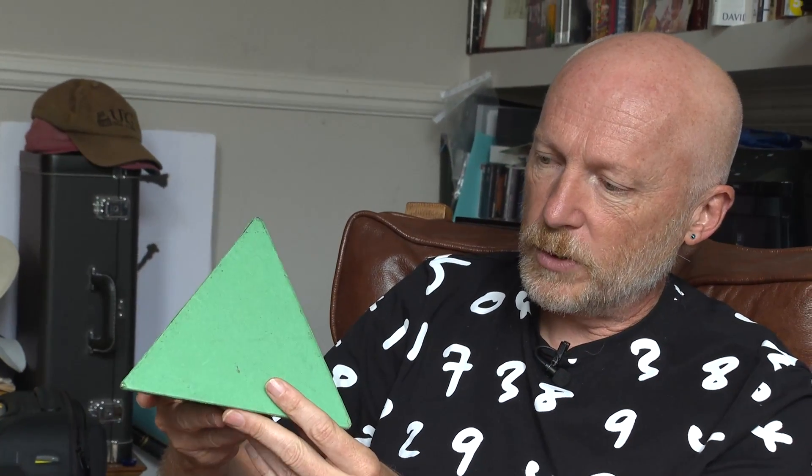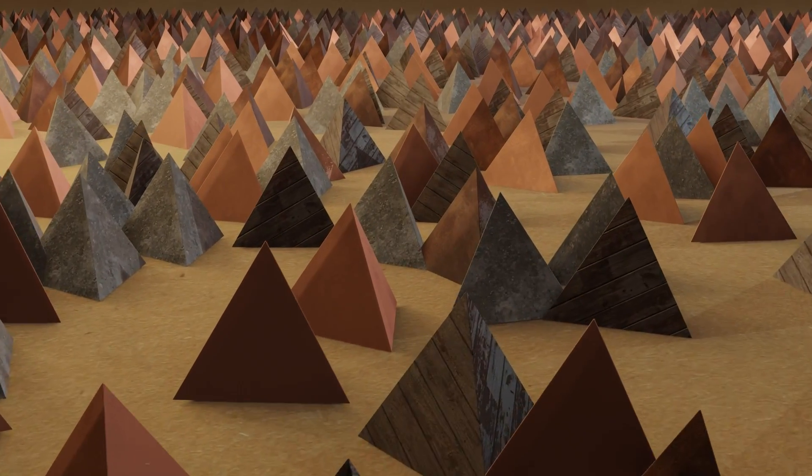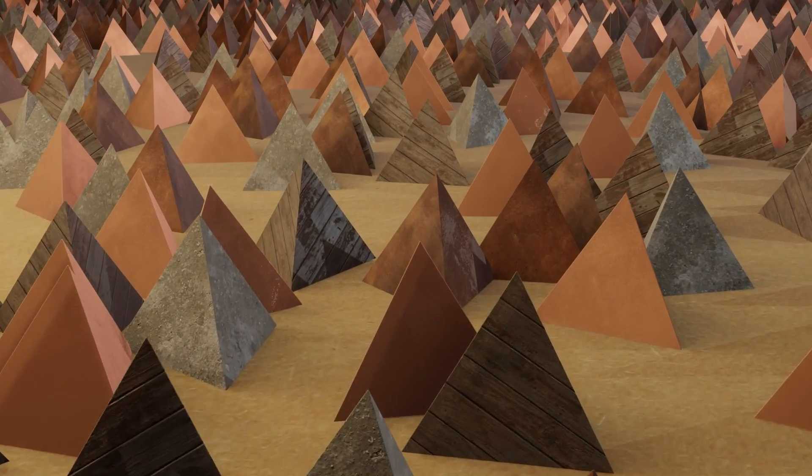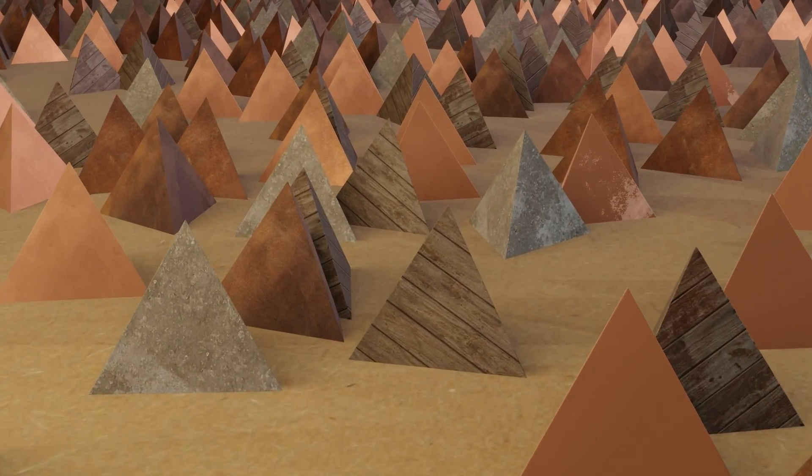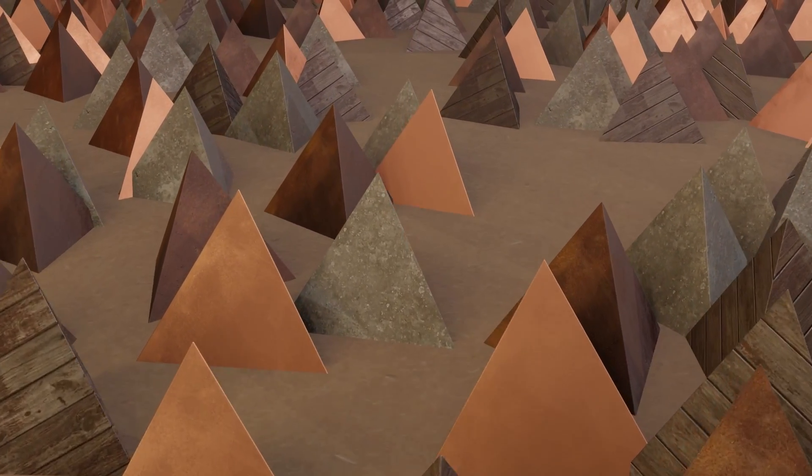But Conrad Shawcross was interested as a sculptor in, well what about taking this atomic shape, the tetrahedron, and seeing what he can build out of it? So one of his very first projects, he built 2,000 tetrahedrons and set himself the task of trying to see what he could build out of these tetrahedrons.